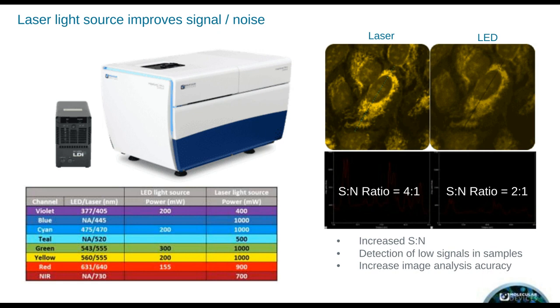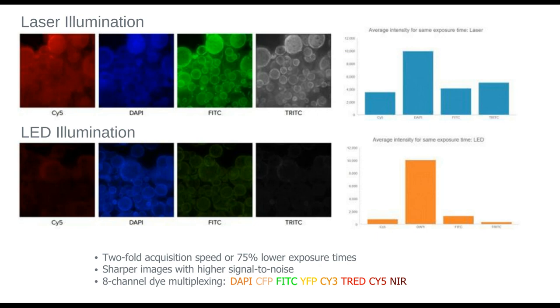Another relevant feature is the type of light source. Most recent versions of these instruments bring high-power eight-channel light sources — between two and six times more powerful than the previous generation. Using laser light sources of that nature brings increased signal-to-noise compared to LED illumination, allows detection of low-signal samples, and increases data accuracy. In practical terms, this means a twofold acquisition speed increase with up to 75% lower exposure times compared to LED illumination. You'll have sharper images and wider flexibility with eight channels allowing for multiplexing.